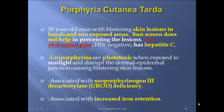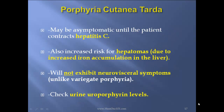Porphyria cutanea tarda case report: 50-year-old man with blistering skin lesions on hands and sun-exposed areas. Sunscreen does not help in preventing the lesions. No abdominal pain. HIV negative. Hepatitis C positive. Porphyrins are phototoxic when exposed to sunlight and disrupt the dermal-epidermal junction, causing blistering skin lesions. It is associated with uroporphyrinogen decarboxylase (UROD) deficiency. Key words: porphyria cutanea tarda, skin lesions, no abdominal pain, hepatitis C, and UROD deficiency. It is associated with increased iron retention. Patients may be asymptomatic until they contract hepatitis C, and there is increased risk for hepatomas due to increased iron accumulation in the liver. They will not exhibit neurovisceral symptoms, unlike variegate porphyria. Diagnosis is via checking urine uroporphyrin levels.